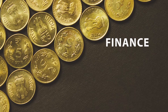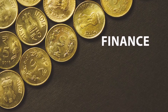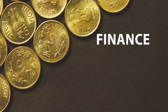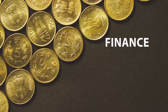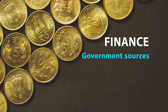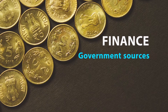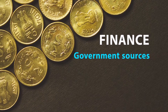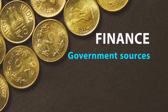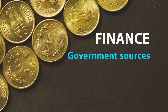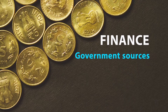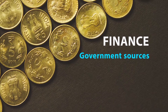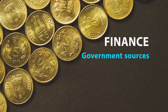Coming to the finance of public libraries — from where do they get their money and how are they maintained? The most important sources are government grants. The government, whether central, state, or local bodies, gives grants to public libraries. In India, the Ministry of Culture and the RRLF — Raja Ram Mohan Royal Library Foundation — provide grants for establishing, maintaining, and promoting public libraries in the country.